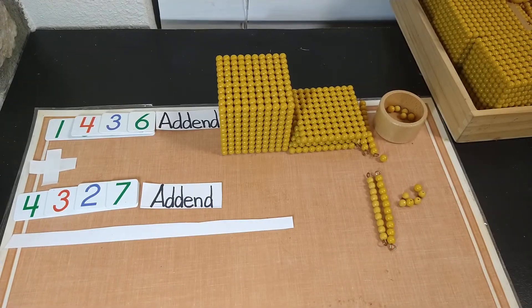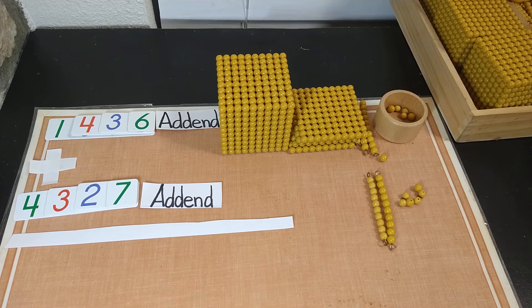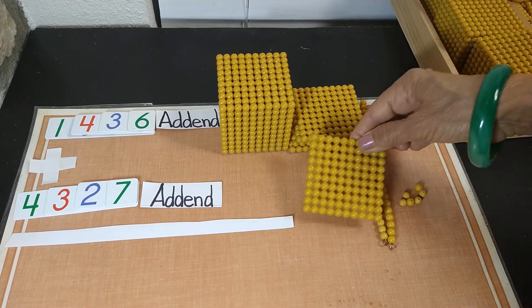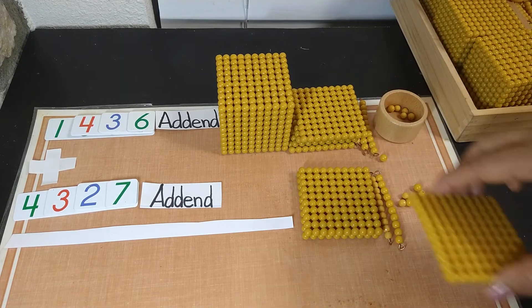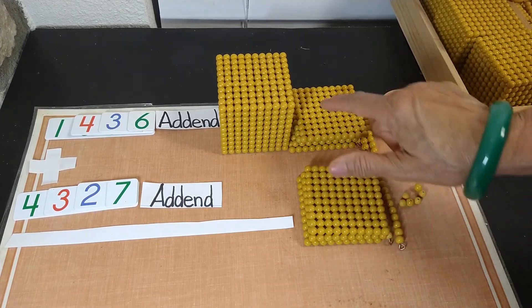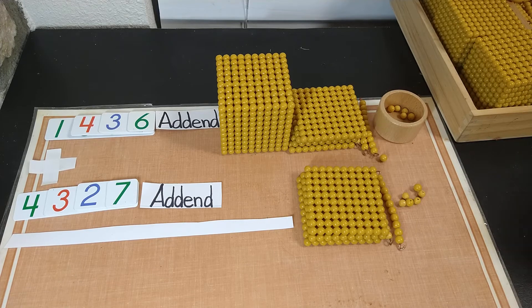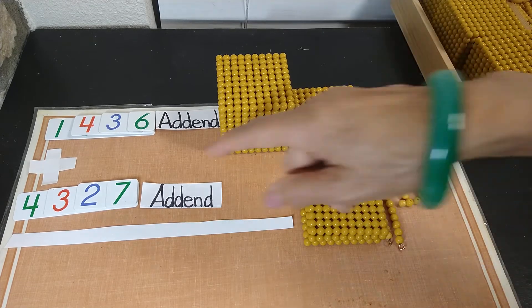So how many hundreds? 3 hundreds. So 1,100. 2,100. And 3 hundreds. So hundreds go under the hundreds category. So how many thousands do we need?